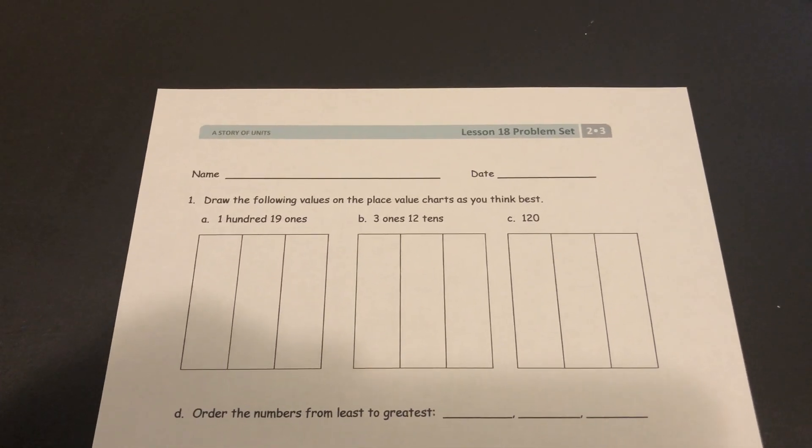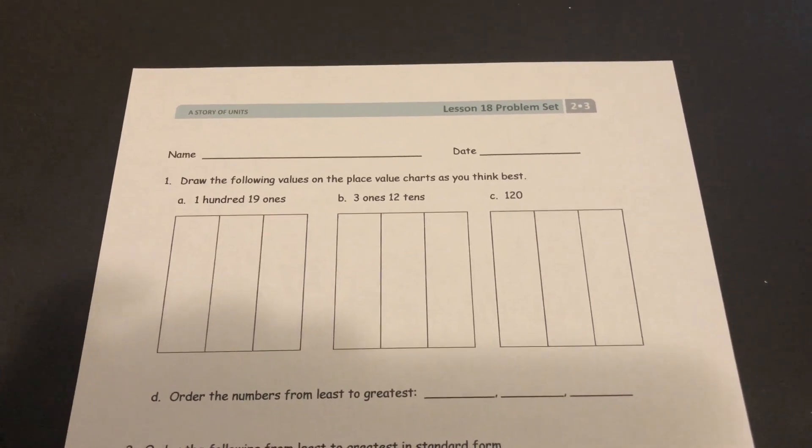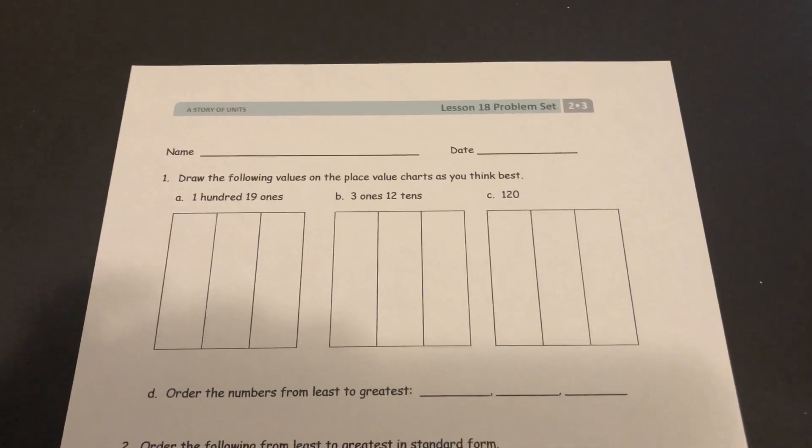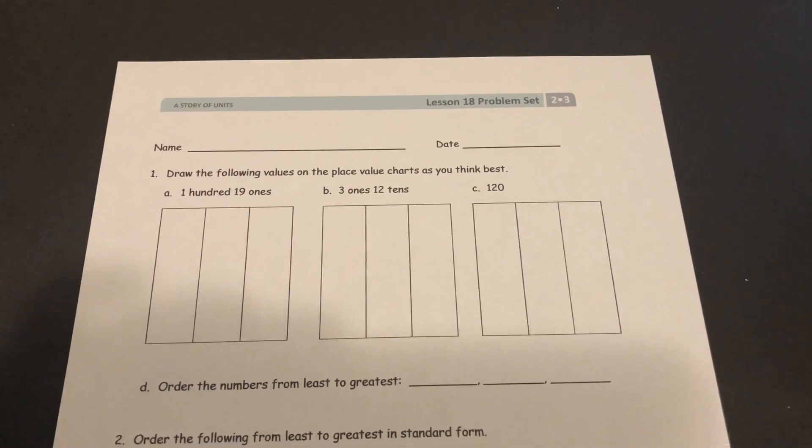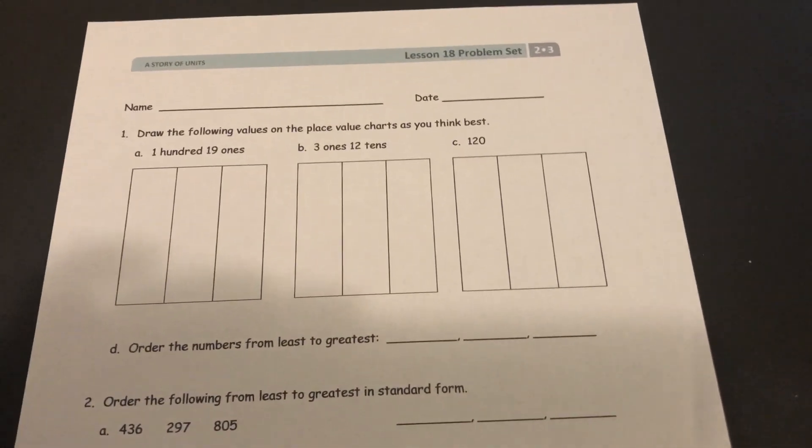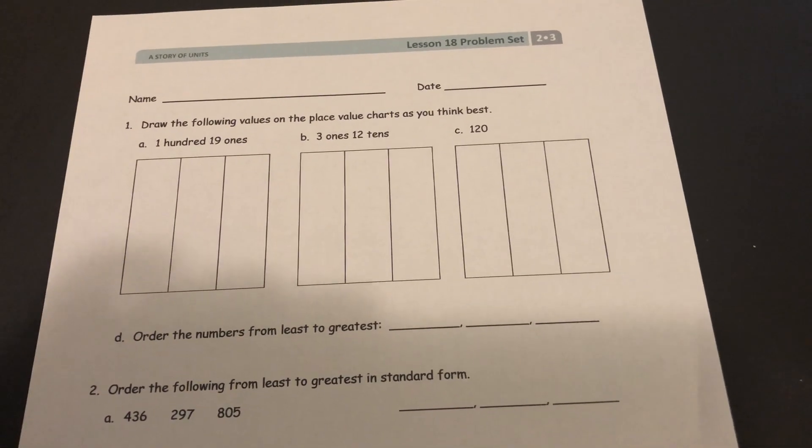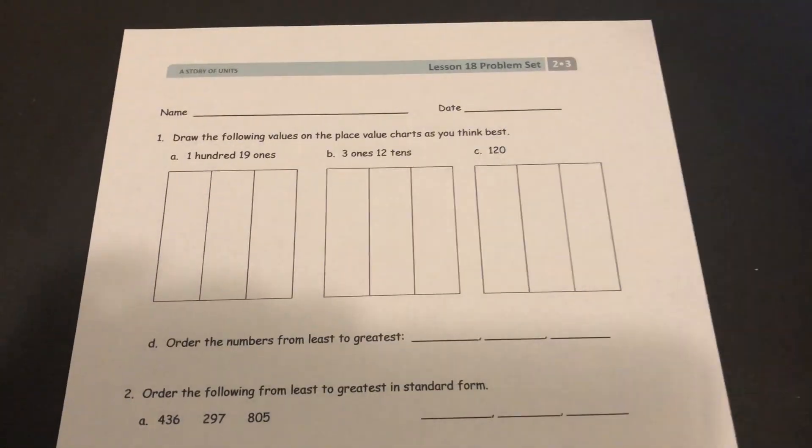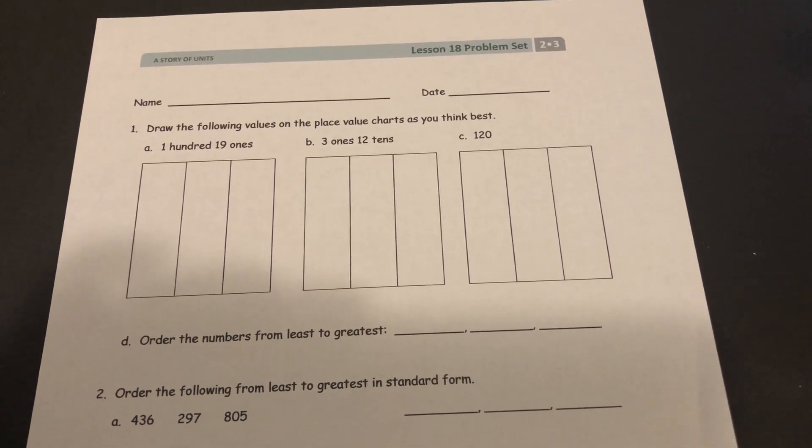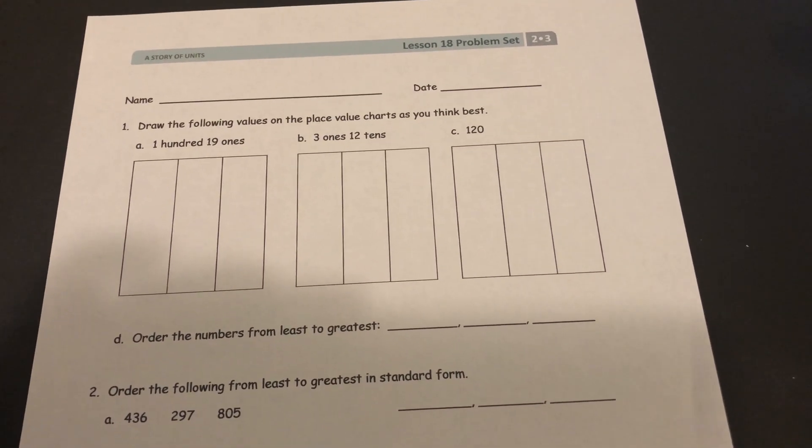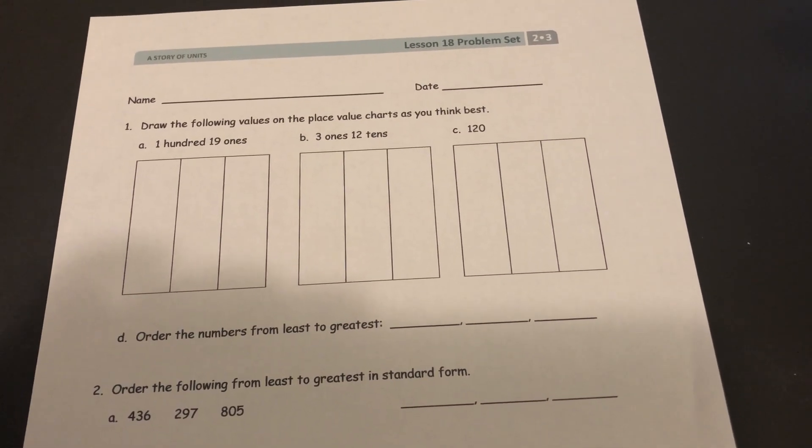Hey boys and girls, so today we're going to go over module 3 lesson 18 and this is the problem set that we did today in class. I'm going to use this today because it's really similar to your homework. So for the first section it wants you to draw the following values on the place value chart as you think best.